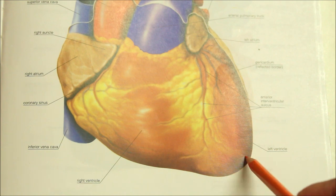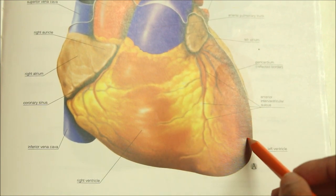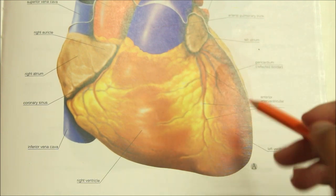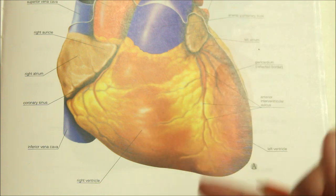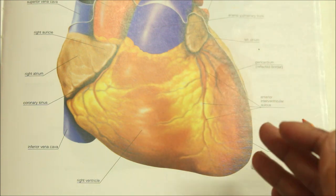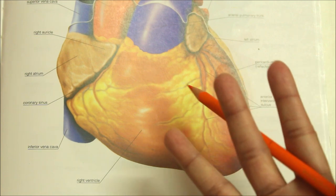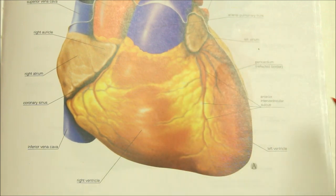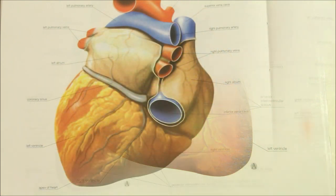Now let's look at the apex of the heart. The apex is formed entirely by the left ventricle. It is directed downwards, forwards and to the left. It is overlapped by the anterior border of the left lung and is situated in the left 5th intercostal space, 9 cm lateral to the mid-sternal line.